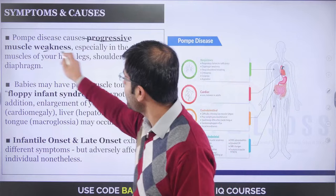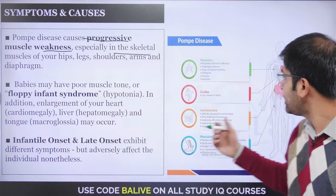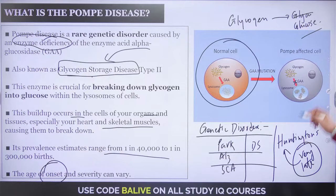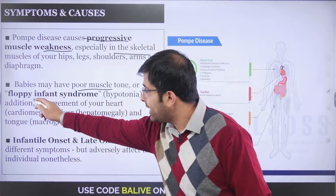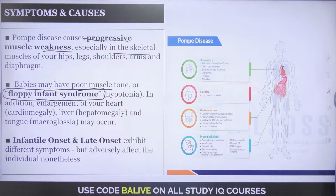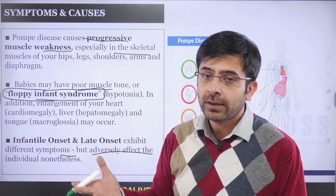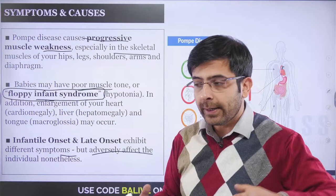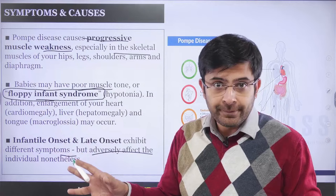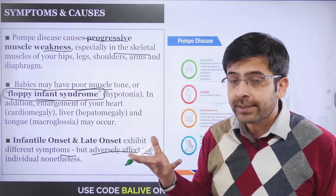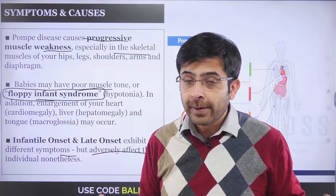Pompe disease causes progressive muscle weakness, especially in skeletal muscles — it's known as glycogen storage disease type 2. Babies may have poor muscle tone, called floppy infant syndrome or Hypotonia. You can have enlargement of the heart, liver, and tongue due to glycogen accumulation. In adulthood onset, stunting is observed — they do not grow to their particular height — and respiratory illnesses develop first.